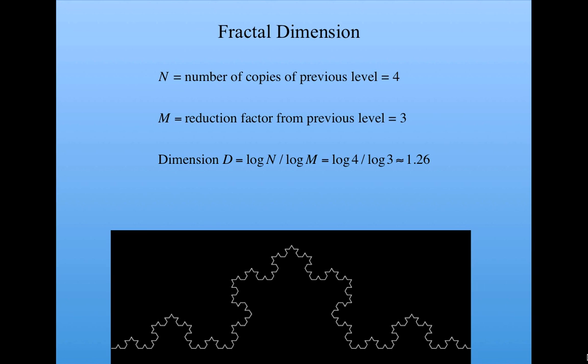In the previous subunit, we derived a generalized definition for dimension, which could be applied to fractals. At each level, we look at the logarithm of the number of copies there are of the object at the previous level, and the reduction factor in the size of a side or a segment from the previous level. Using this definition, we calculated that the dimension of the Koch curve was approximately 1.26.